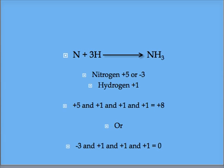Now we test nitrogen's other valence, negative three. A negative three valence from nitrogen and a positive one valence from hydrogen three times yields zero. This reaction is possible.